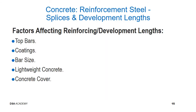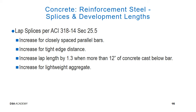Factors affecting reinforcing development lengths are top bars, coatings, bar size, lightweight concrete, and concrete cover. Lap splice per ACI 318-14, Section 25.5: increase for closely spaced parallel bars; increase for tight edge distance; increase lap length by 1.3 for top bar where more than 12 inches of concrete is cast below the bar; increase for lightweight aggregate. Also, larger bars will require longer lap splice and development lengths.